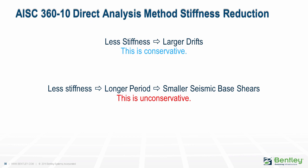Using the reduced stiffnesses in the drift analysis may be either conservative or unconservative. Less stiffness means larger drifts, which is conservative, but less stiffness means the calculated period is longer, which may result in a smaller base shear, which means smaller story forces and smaller drifts — this is unconservative. When using the direct analysis method, my recommendation is to run the analysis twice: once without the reduced stiffnesses to determine the periods, applied loads, and drifts; and then again with the reduced stiffnesses for member design. Be sure to use the periods obtained from the first analysis if your program automatically calculates seismic forces in the second analysis.